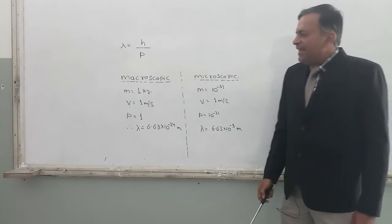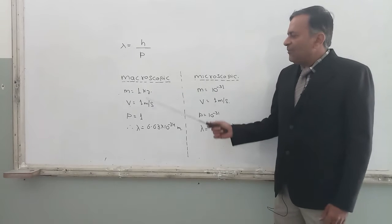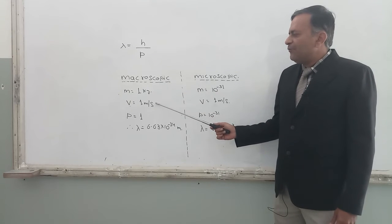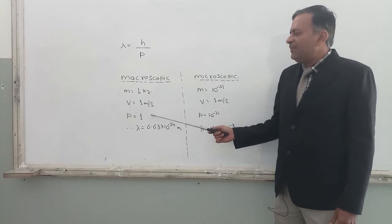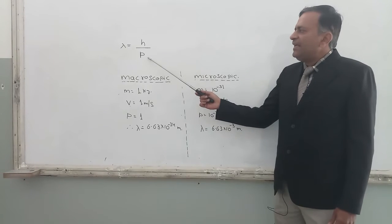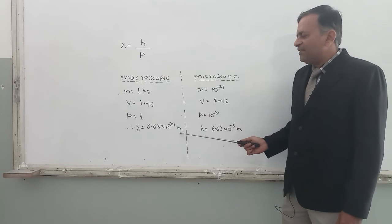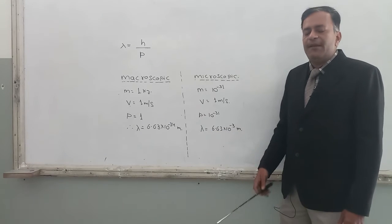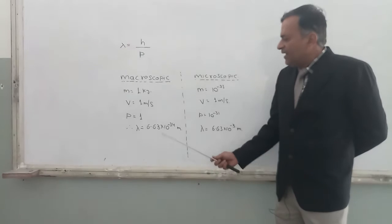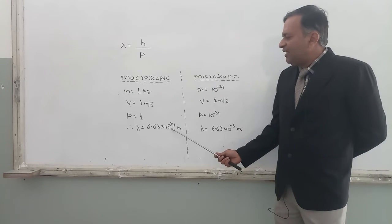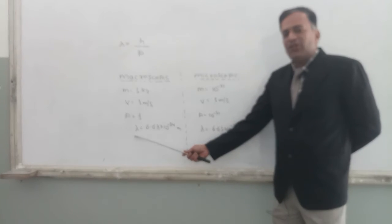So if there is a macroscopic body of mass 1 kg moving with speed 1 meter per second, its momentum will be equal to 1. And when I put the momentum over here and find the wavelength, that will be 6.63 into 10 to the power minus 34 meter. You can see the number is very small. 10 to the power minus 34 is the wavelength of such particles.